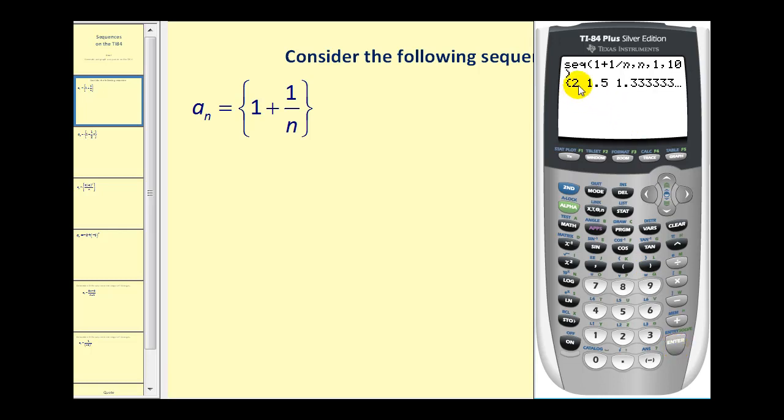The calculator is showing the terms in the sequence. Notice there's more terms on the right, so we'd have to press the right arrow to see more terms. Now one thing we notice right away is that these are expressed in decimal form. If we want the terms to be expressed in fraction form, we can press math, enter, enter, and then the terms will be in fraction form.